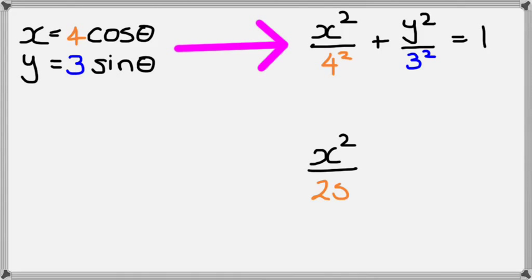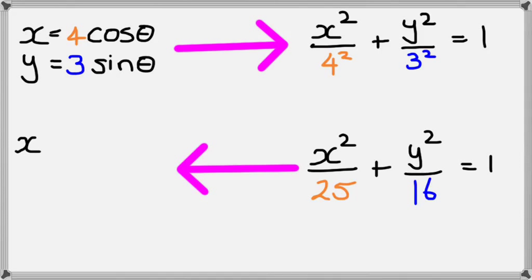Looking at going backwards, if we have x squared over 25 plus y squared over 16 equals one, then we know that x - well, a is square root of 25 which is five - so it'll be five cos theta. And y is going to equal square root of 16, which is four, so that's four sine theta.